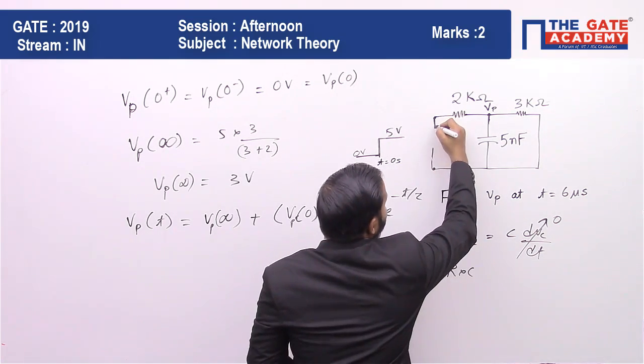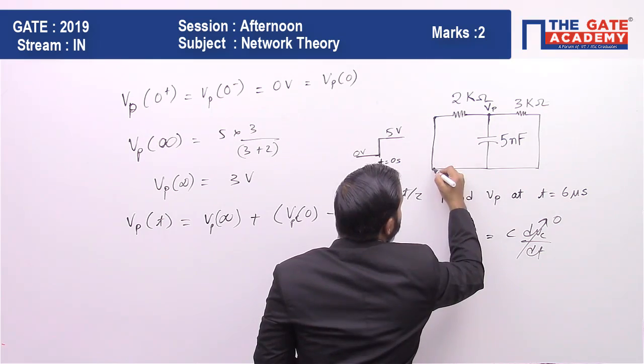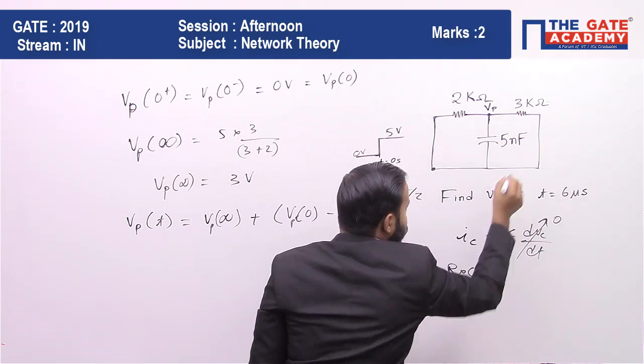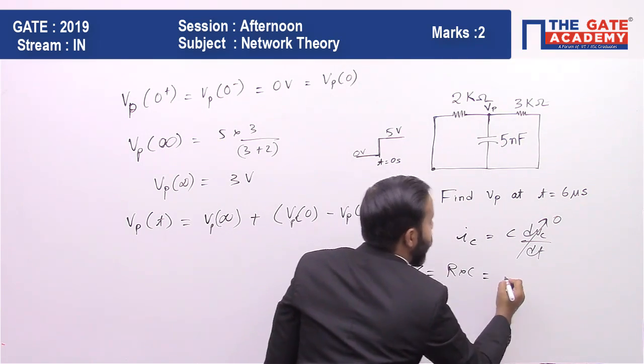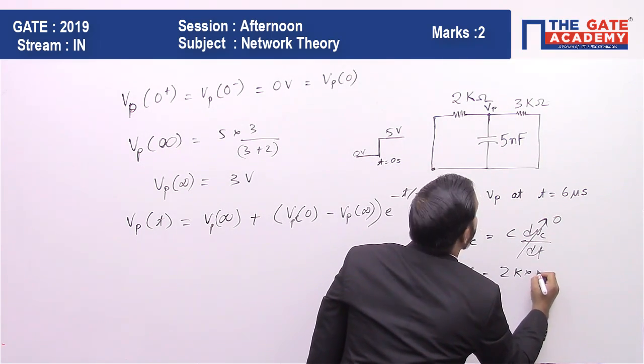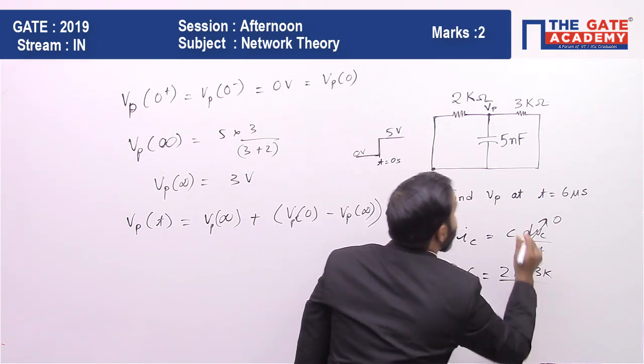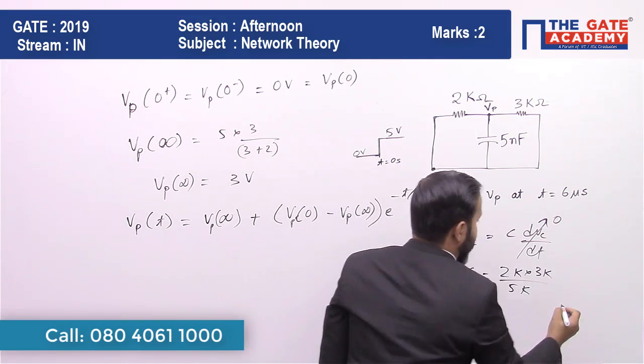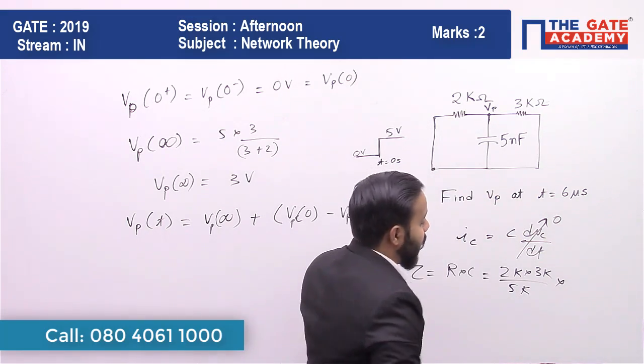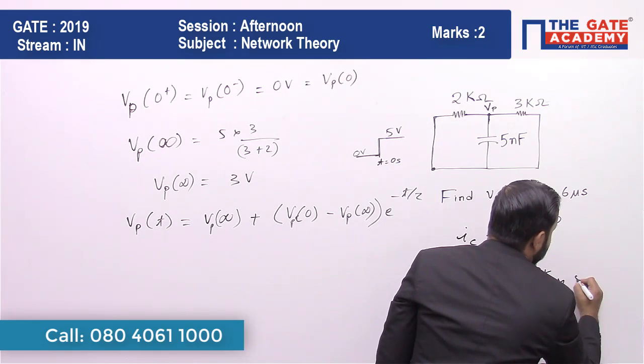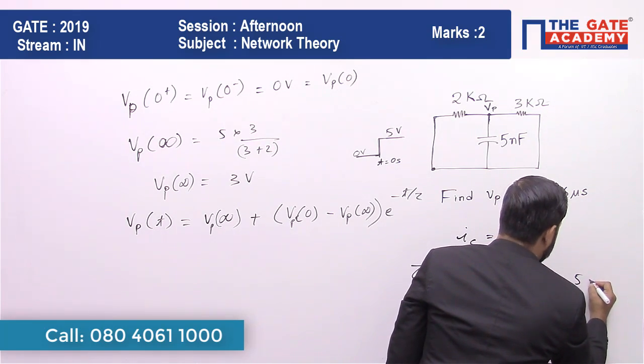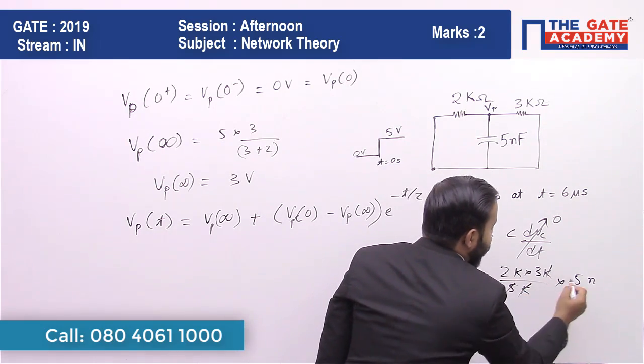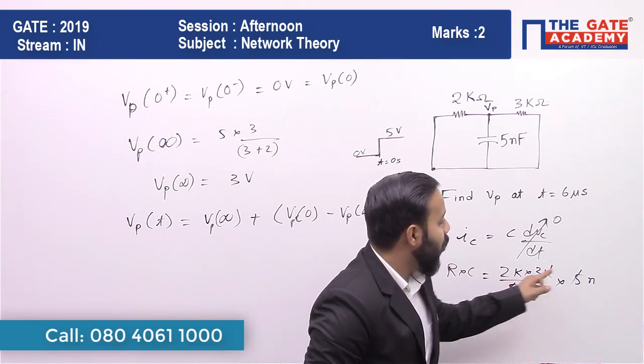Had we had a current source, we would have opened it, but now we have a voltage source so we short it. This is parallel to this, so we will have 2 kΩ times 3 kΩ divided by 2 kΩ plus 3 kΩ, that is 5 kΩ, multiplied by 5 nanofarad.